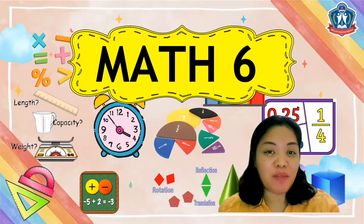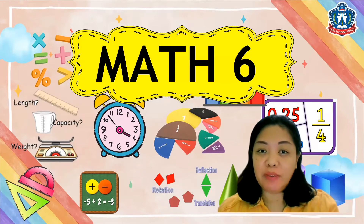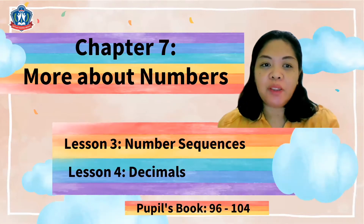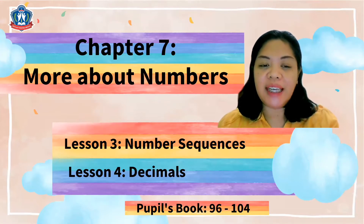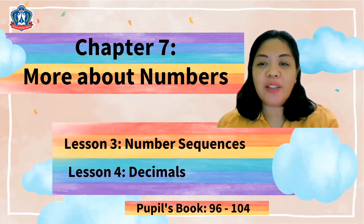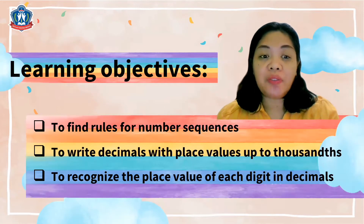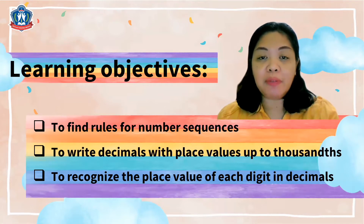Hello students, welcome again to our Math 6 class. This is Miss Claire. In this video we will continue our lesson for Chapter 7. You will learn Lesson 3: Number Sequences, and Lesson 4 about Decimals. You can find these two lessons in your textbook pages 96 to 104. The learning objectives are to find rules for number sequences, to write decimals with place values up to thousandths, and to recognize the place value of each digit in decimals.